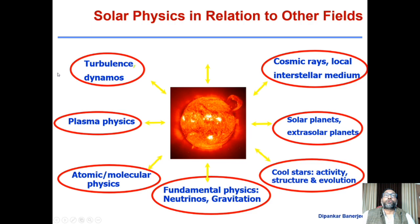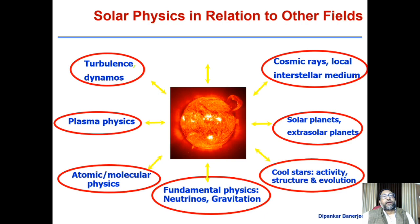Nature is very turbulent, and magnetic field plays a crucial role in controlling a lot of dynamics. Magnetic field is generated by a process called dynamo. In the sun, magnetic fields are also generated through a dynamo process. So if you want to understand the generation mechanisms of magnetic field and the nature of chaos in the universe, the sun provides an ideal laboratory.